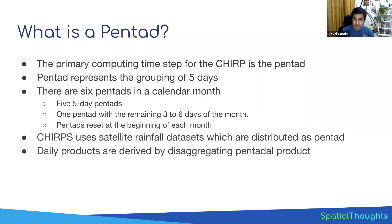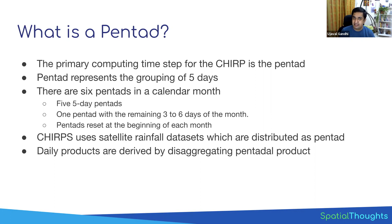The primary computing step for CHIRPS is the pentad, so you should always use the pentad data. There are some applications that require daily data, and the CHIRPS team disaggregates this data — distributing five days of rainfall among individual days using another source to estimate the distribution. However, that daily data is sometimes not very accurate and doesn't always match ground stations. So unless you really need daily data, CHIRPS should always be used as a pentad dataset, as that's its native temporal resolution.